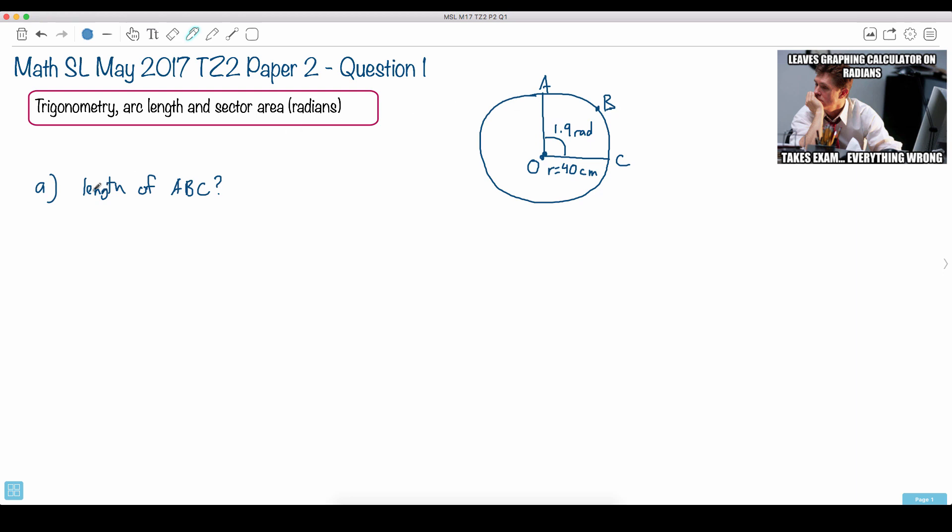Now first we want the length of ABC. Good news, this is actually really easy if you recognize what to do. What we're looking for here is the arc length. If we want the arc length, we just need to look in our formula booklet and look it up. It says L equals theta R. That's it.